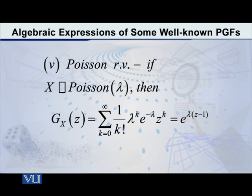After that, let's talk about Poisson random variable. Again, it is a very well-known distribution and the PGF is given by E raised to lambda into Z minus 1.